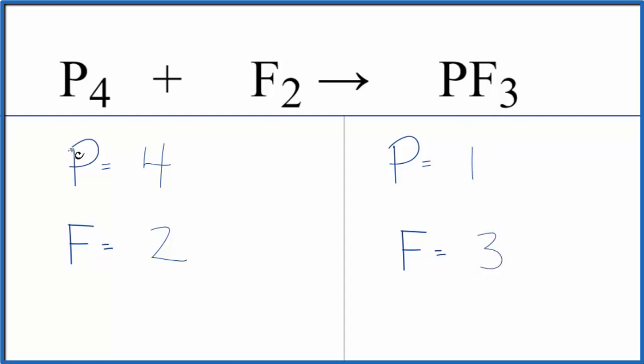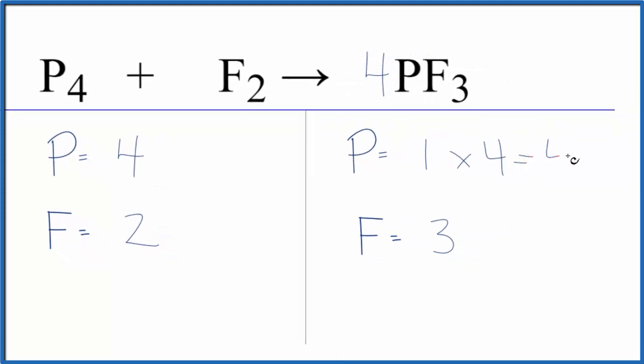I think what I'll do is I'll balance the phosphorus atoms first. And the reason is if I put a four here, one times four, that would balance the phosphorus atoms.